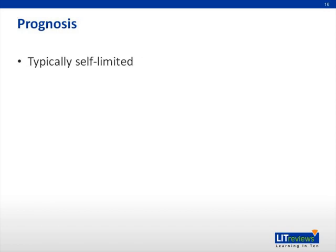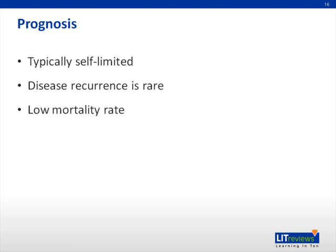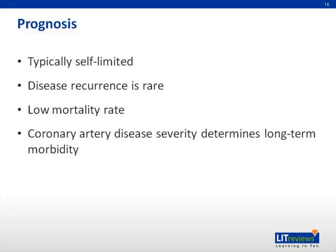KD is typically self-limited and the prognosis is excellent in the majority of patients who receive timely treatment. Disease recurrence is rare and the overall mortality rate is currently estimated at less than 0.1%. The long-term morbidity for patients typically depends on the severity of coronary artery involvement. Overall, 50% of coronary artery aneurysms regress to normal by one to two years after the illness, with smaller aneurysms more likely to regress. Larger aneurysms are unlikely to resolve and are most likely to lead to thrombosis or stenosis. Coronary artery bypass grafting may be required if myocardial perfusion is significantly impaired.